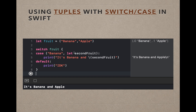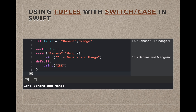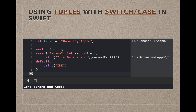In the previous example we weren't able to access the mango directly through the print statement. To solve that, we implement a let binding on the second fruit, which allows us to access the second element — in this case apple — through the print statement. So the output is 'it's a banana and apple'.